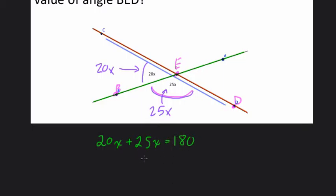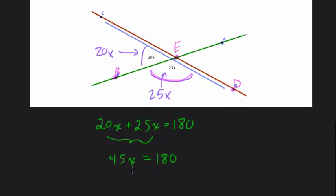And then solve for X to find the value of the angle. This is 45X, right? And 45 does go into 180. I know that 45 goes into 90 twice, 90 goes into 180 twice. So 45 goes into 180 four times. So X is 4.